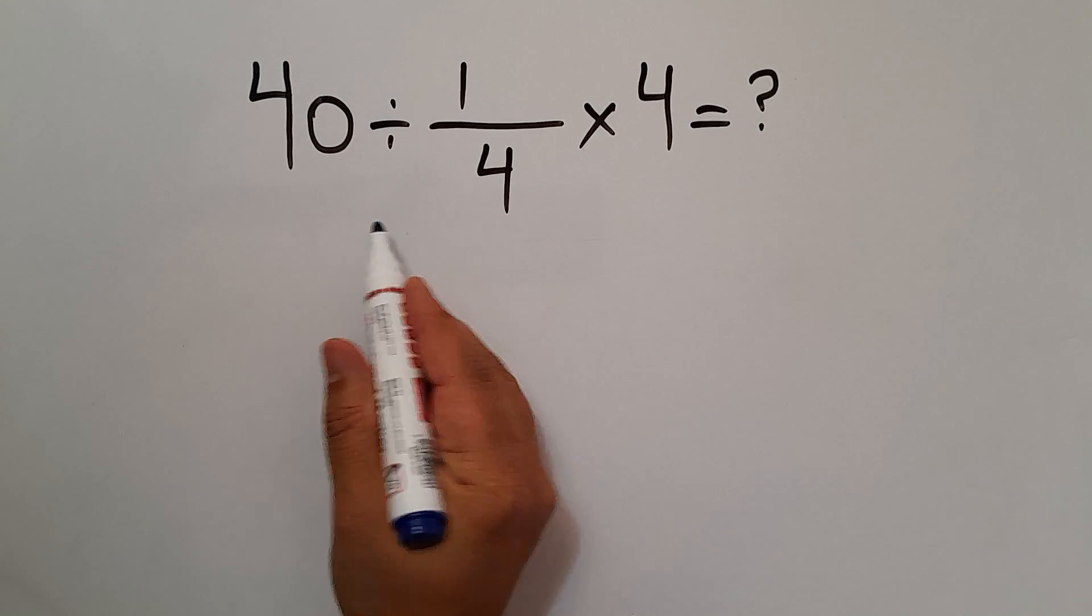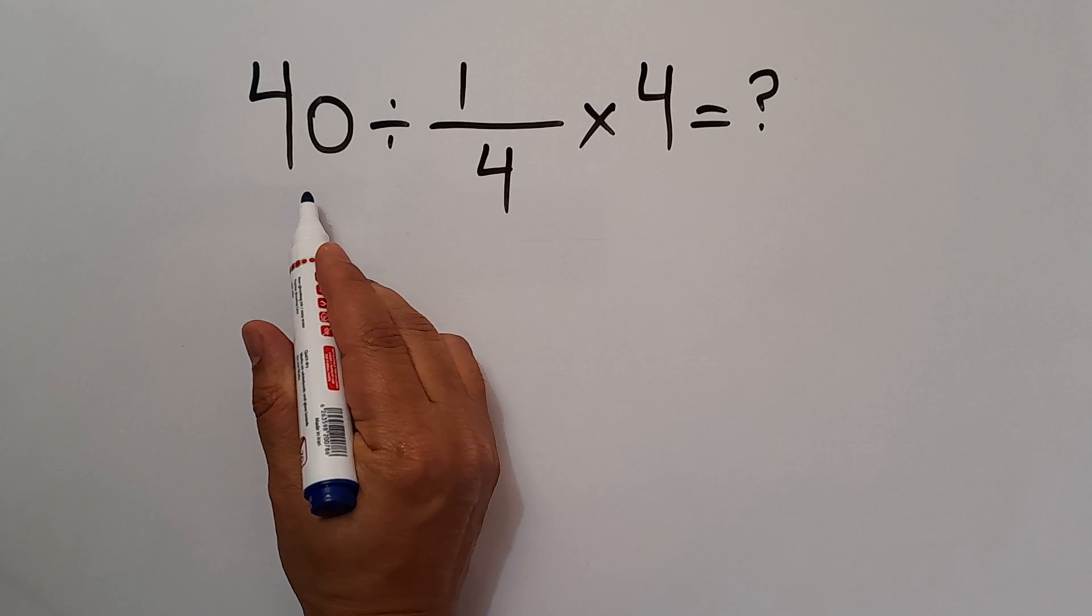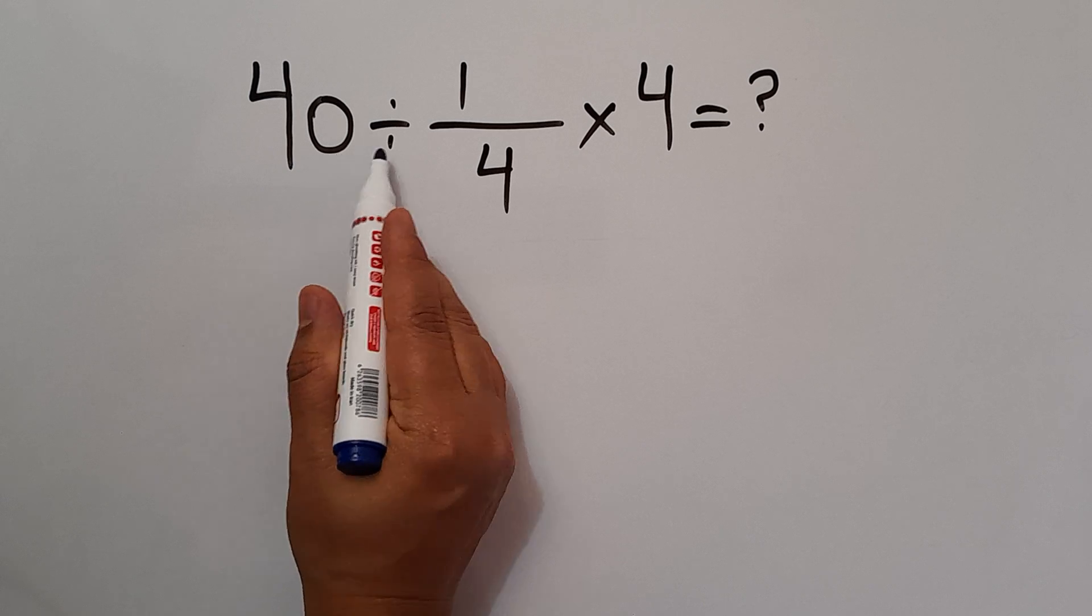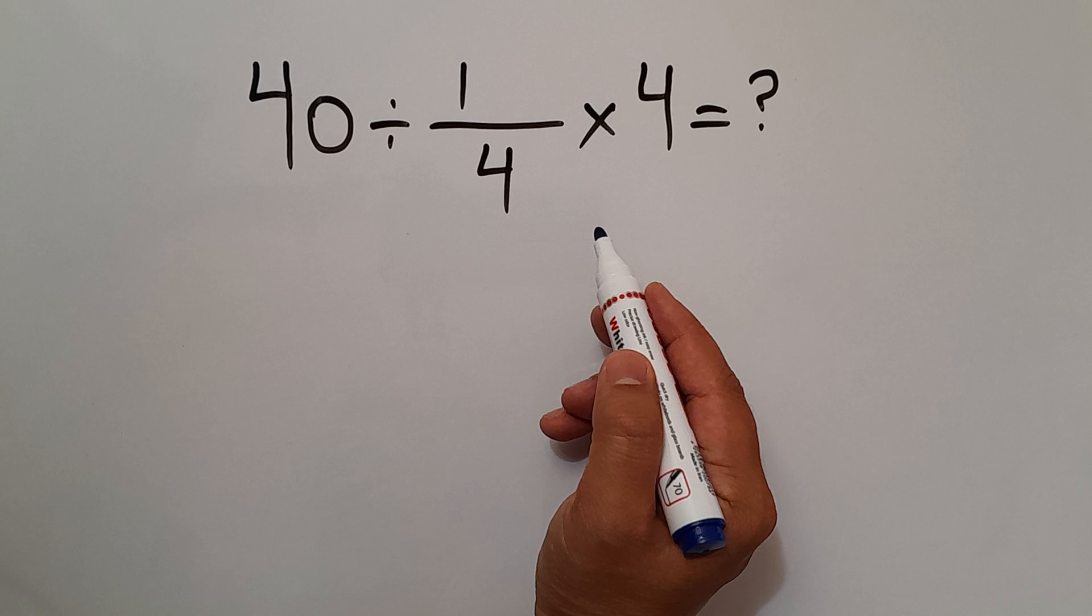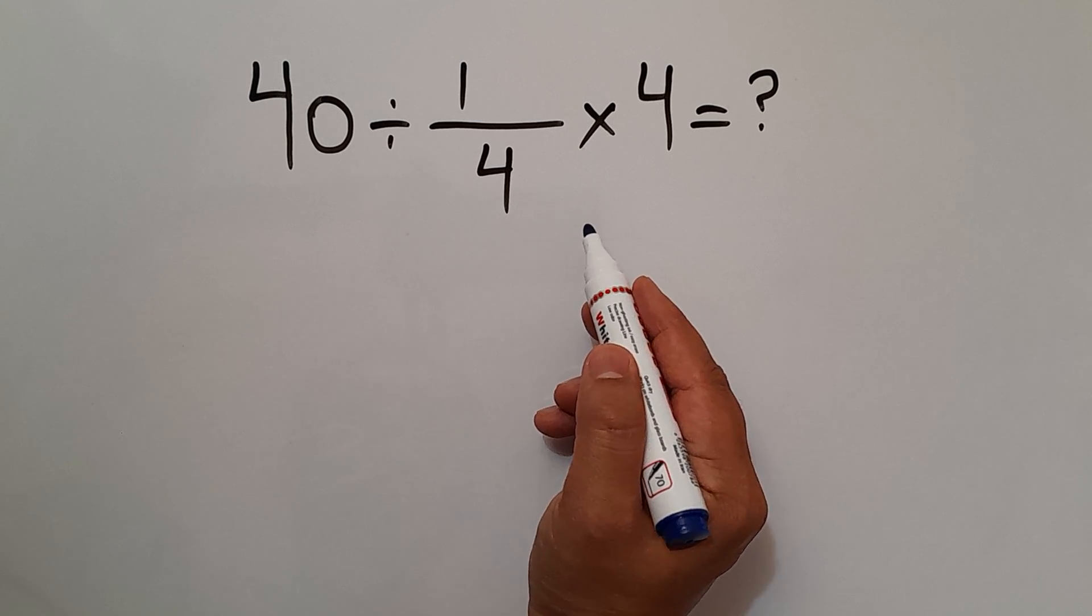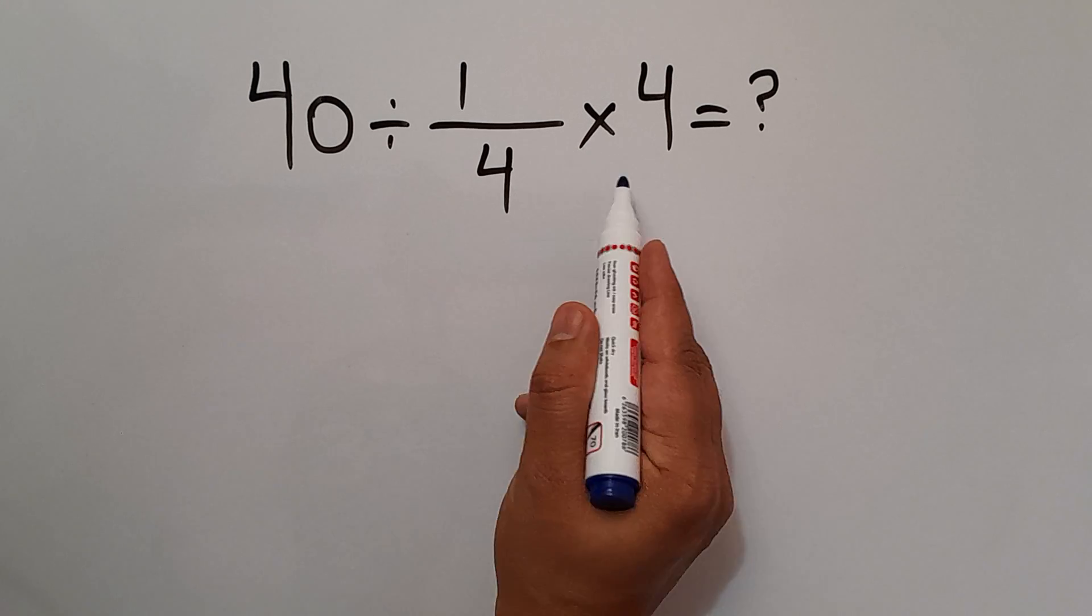Hey guys, welcome to MathJoy. In this video we want to find the value of this expression: 40 divided by 1 over 4 times 4. Are you ready to solve? Let's go and get started. In this expression we have one division and one multiplication.